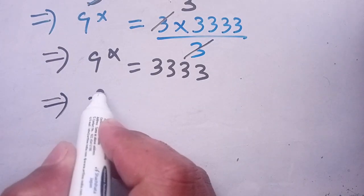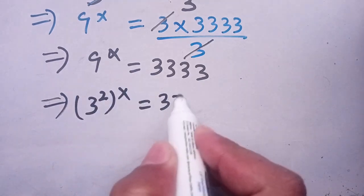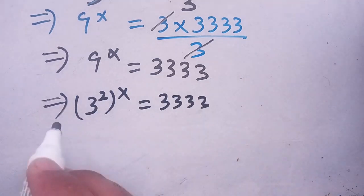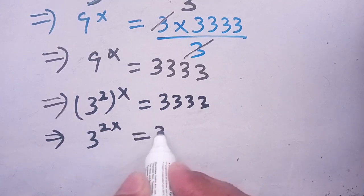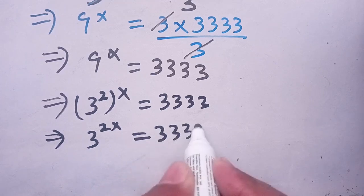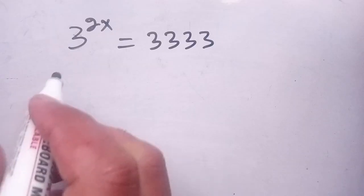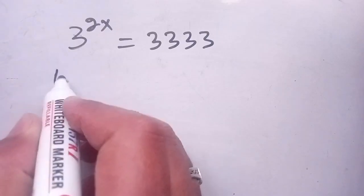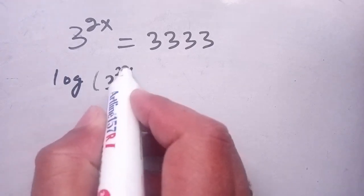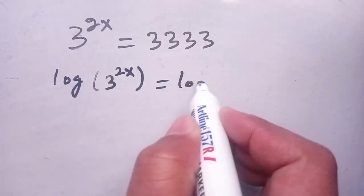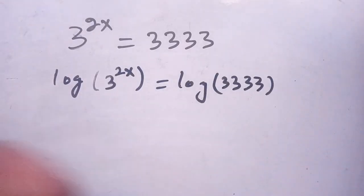Now, 9 can be written as 3 to the power 2, so we have 3 to the power 2 raised to the power x is equal to 3333, which gives 3 to the power 2x is equal to 3333. In the next step, we take the log on both sides: log of 3 to the power 2x is equal to log of 3333.